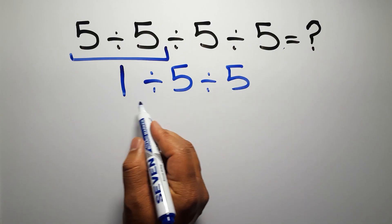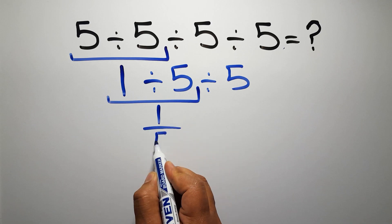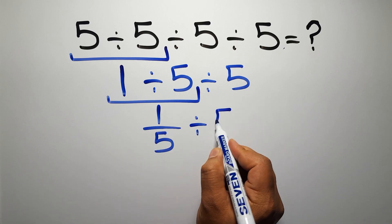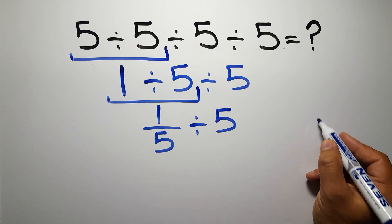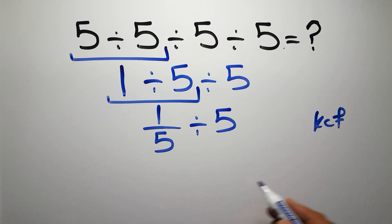Now we have to do this division. 1 divided by 5 can be written as 1 over 5, then divided by 5. Now according to the KCF rule: K stands for Keep, C stands for Change, and F stands for Flip.